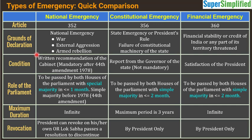In the case of constitutional emergency, the Governor of the state will give a report to the President of India. However, it is not mandatory — if the President feels that there is some issue in a state, he can also impose President's Rule. But generally a report from the Governor is sought. For financial emergency, no report or recommendation from anyone is required — it is only the satisfaction of the President. If the President is satisfied that financial emergency conditions have arisen, then he can invoke it.